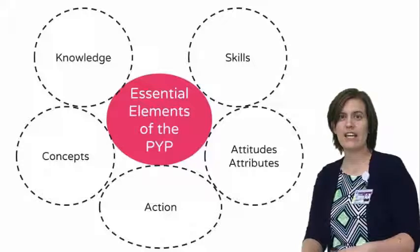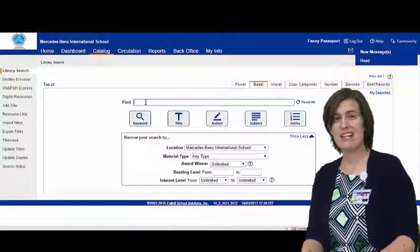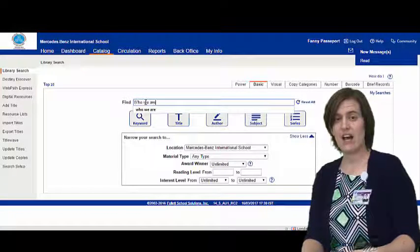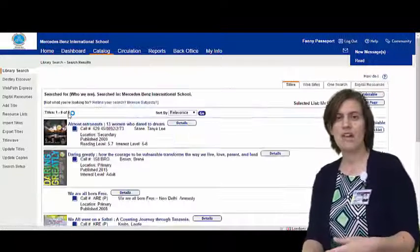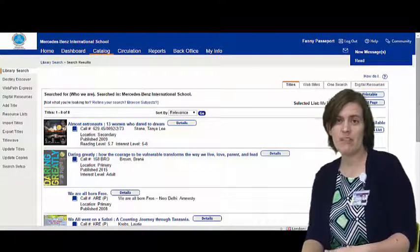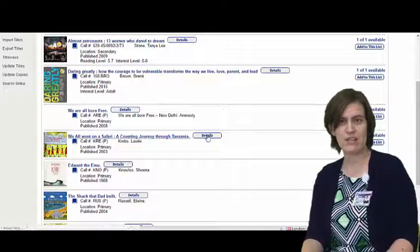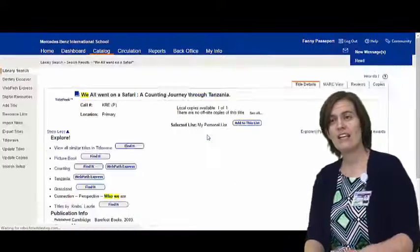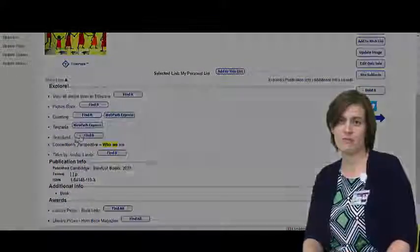Also we're looking at ways to expand how we integrate it. So for example, in the library we started through Destiny, our library search engine, tagging books with the essential elements of the PYP. So if I'm a student and I want to know more about the transdisciplinary theme 'who we are,' I can type in 'who we are' and I'll get a list of books related to that transdisciplinary theme.